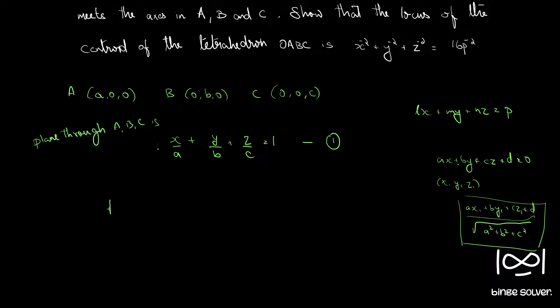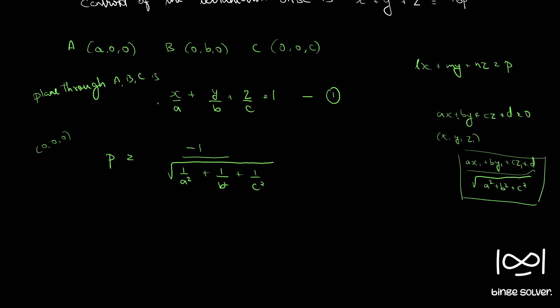So the distance p is given by, since it's from origin to this plane point is 0 0 0, so when you apply this formula you can see that if this becomes minus 1, d here is minus 1 by root of 1 by a square plus 1 by b square plus 1 by c square. Or if you inverse and square we get 1 by p square equal to 1 by a square plus 1 by b square plus 1 by c square. So let's call this equation 2.